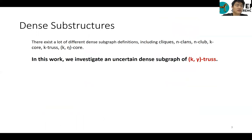One key graph analytic task is the identification of dense sub-structures like cliques, k-core, k-truths, and k-gamma-core. In this work, we investigate an important definition of k-gamma-truths.